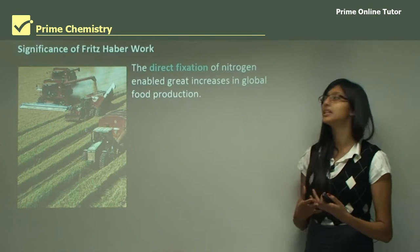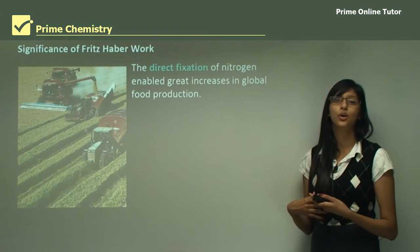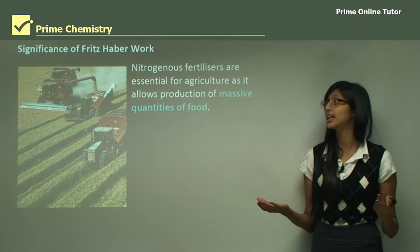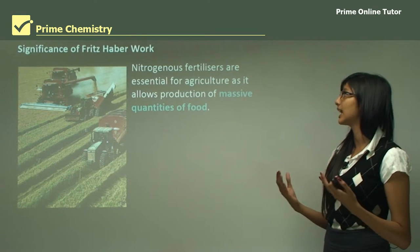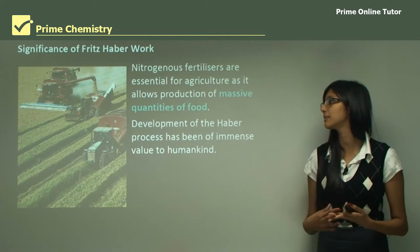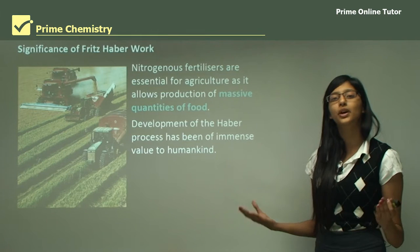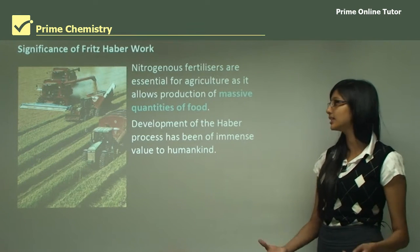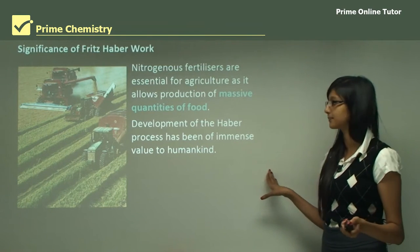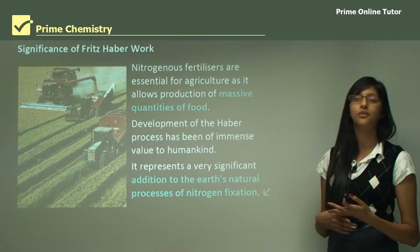The most significant aspect of Fritz Haber's work was that the direct fixation of nitrogen enabled great increases in global food production, helping to overcome the challenge of a rapidly growing population. Nitrogenous fertilizers are essential for agriculture, allowing production of massive quantities of food. The development of the Haber process has been of immense value to humankind and represents a significant addition to the Earth's natural processes of nitrogen fixation.